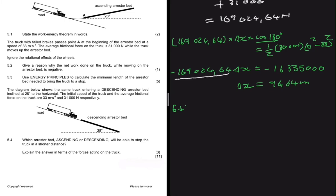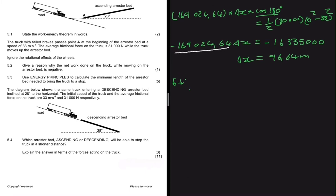For 5.4, the same truck now enters a descending arrestor bed inclined at 28 degrees, with the same initial speed of 33 m/s and frictional force of 31,000 N. The question asks: which arrestor bed — ascending or descending — stops the truck in a shorter distance? Common sense and analysis both show the ascending bed stops the truck in a shorter distance.